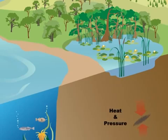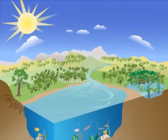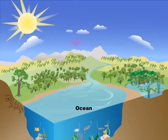Over millions of years, heat and pressure turn the carbon from these plants and animals into fossil fuels, like coal, oil, and natural gas. The ocean also plays an important role in the carbon cycle.